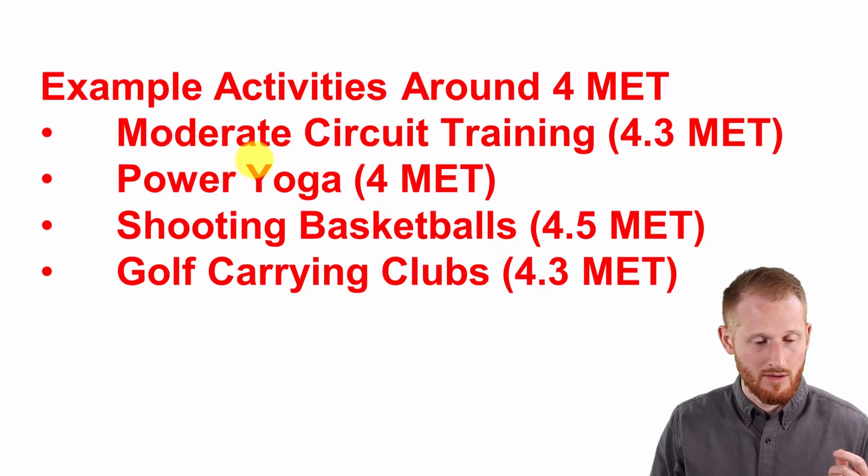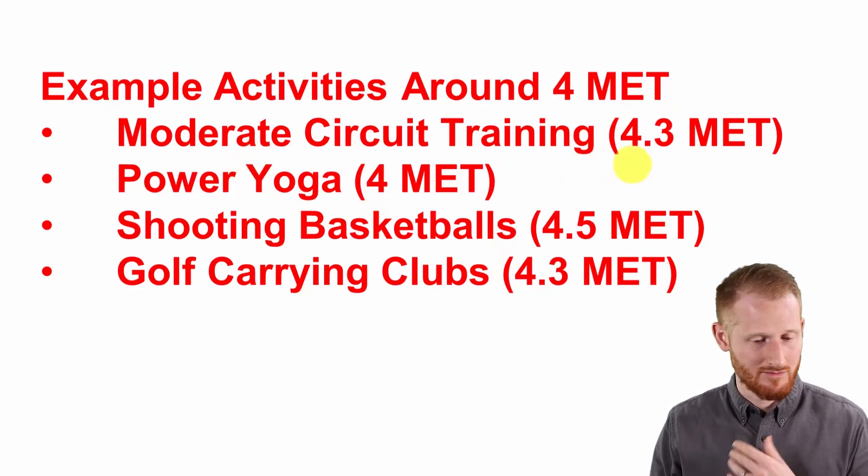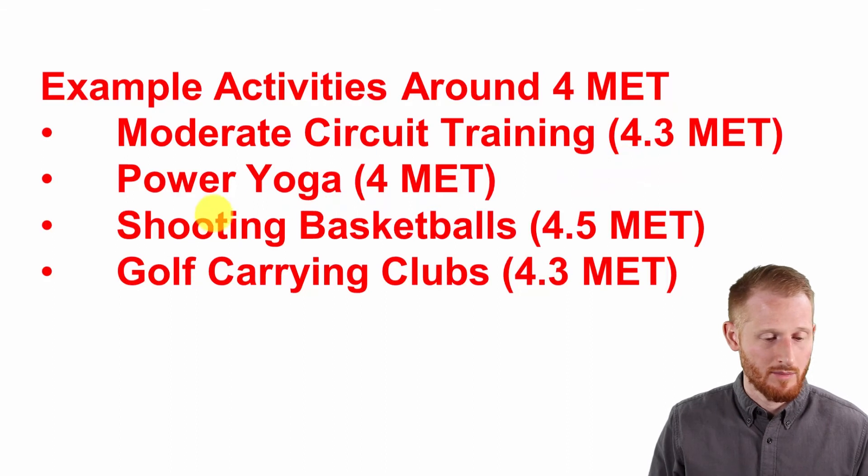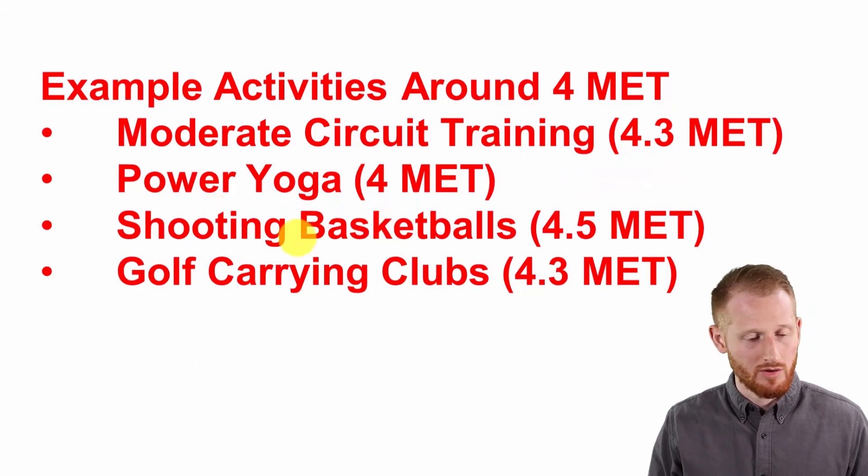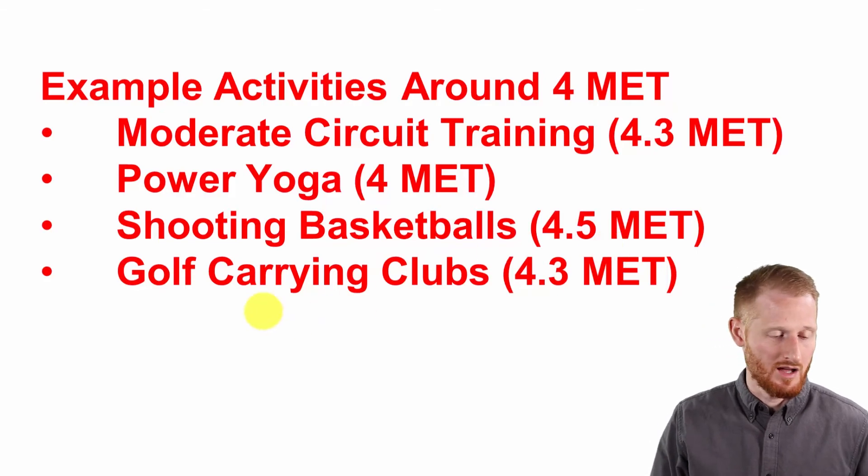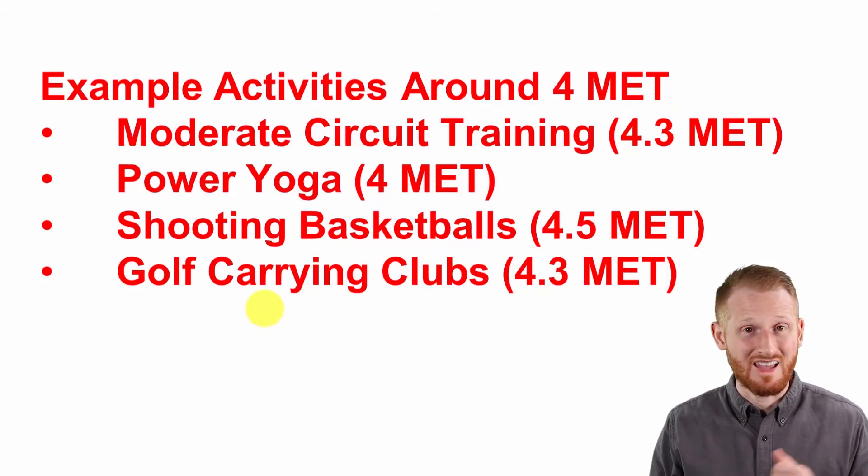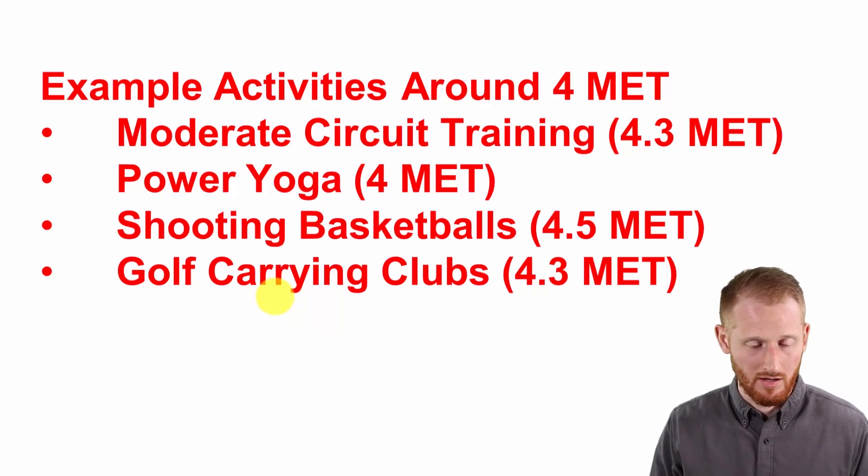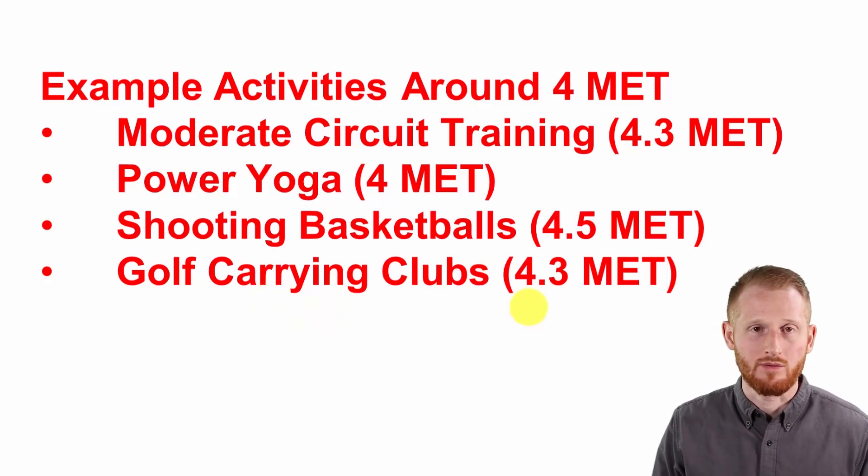Moderate intensity circuit training is 4.3 METs, right on for what we're looking for. Power yoga is 4 METs, pretty close. Shooting basketball is about 4.5 METs. Playing golf and carrying your clubs rather than using some sort of wheeled carrier or a cart would be 4.3 METs as well.